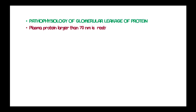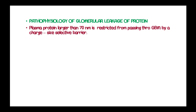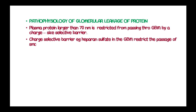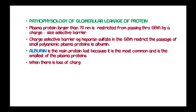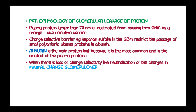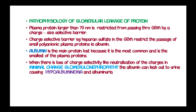Plasma proteins larger than 70 nanometers are restricted from passing through the glomerular basement membrane by a charge-size barrier. The charge-selective barrier, such as heparin sulfate within the glomerular basement membrane, restricts the passage of small polyanion plasma proteins, most commonly albumin. Albumin is the main protein lost because it is the most abundant and smallest of the plasma proteins. When charge-selectivity is lost, as in minimal change glomerulopathy, albumin leaks into urine causing hypoalbuminemia and albuminuria.